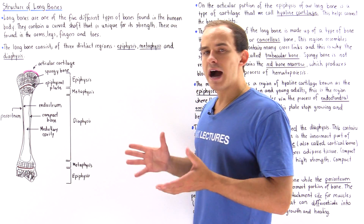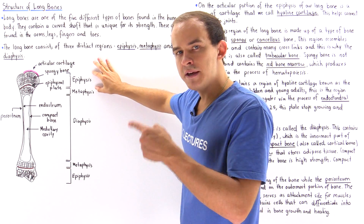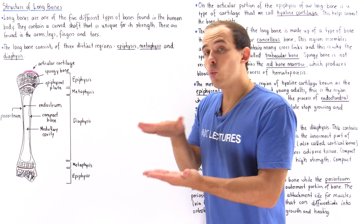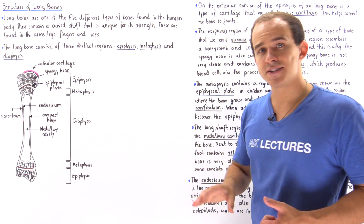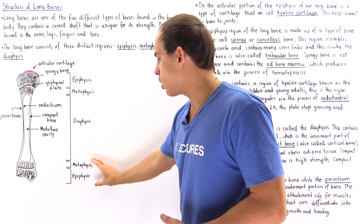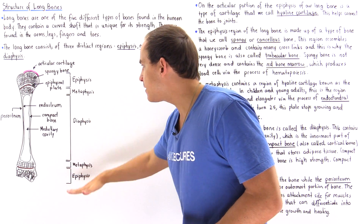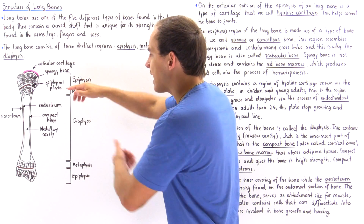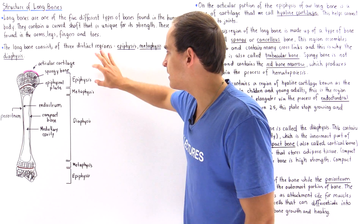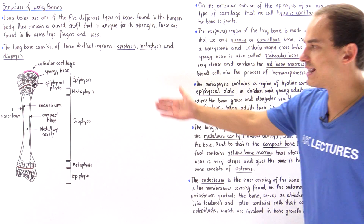Long bones can be divided into three different regions. We have the upper region known as the epiphysis, the middle portion known as the diaphysis, and what connects the epiphysis to the diaphysis is a section known as the metaphysis. These sections are also found on the bottom of the bone, so we have the epiphysis on the top and bottom, the diaphysis as the middle shaft, and the metaphysis connecting them.